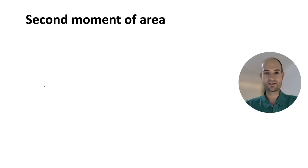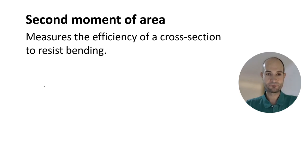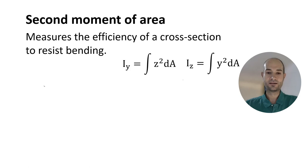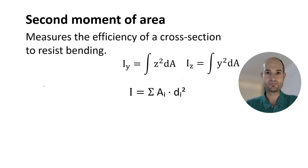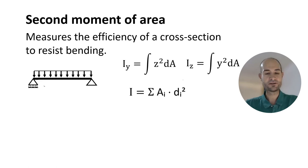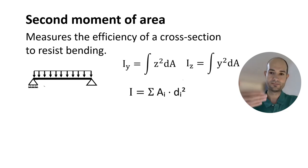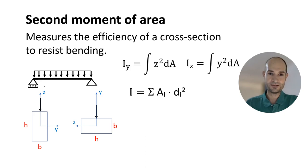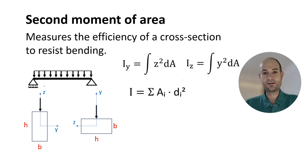The second moment of area, or area moment of inertia, measures the efficiency of a cross-section to resist bending. Before we had area times distance; now we have area times distance squared. What the integral is doing is adding up all the tiny pieces that make up the whole section. Imagine we have a bridge with a line load and we support it with a scaffold board. What's better — having the board upright or flat? From experience, you probably know it's better to put it vertical, because it has a bigger second moment of area.